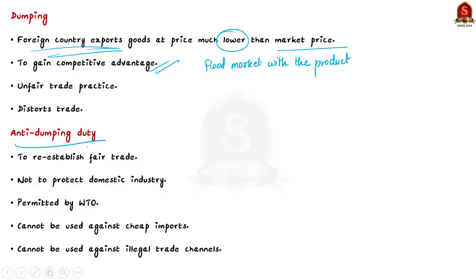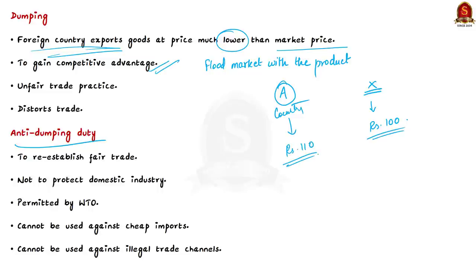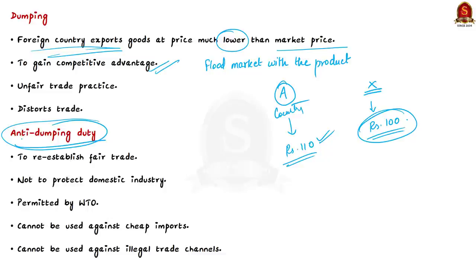Dumping is identified by comparing prices in two markets. For example, assume product X is imported by India from country A. If the price of product X sold in India is ₹100, but the price in country A itself is ₹110, this is called dumping — it is selling to India at a much lower price than its own market value, which is why it is an unfair trade practice.